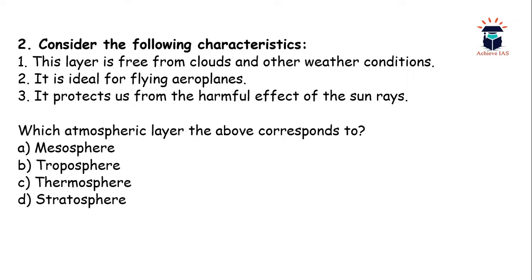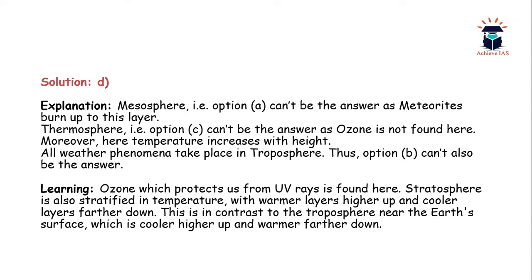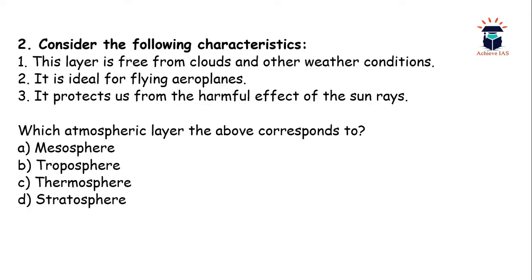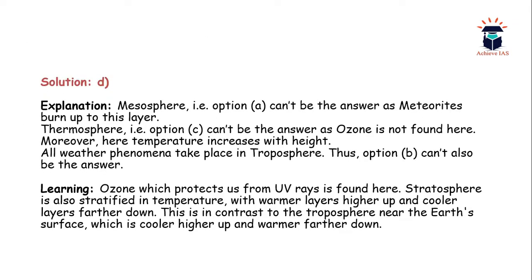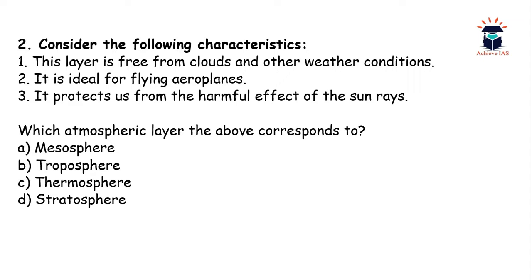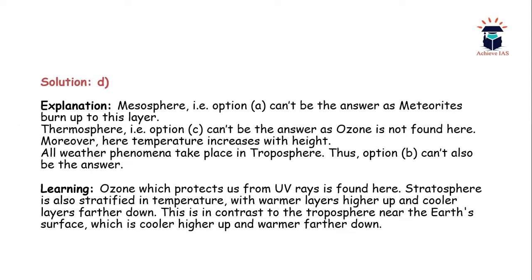Next question: consider the following characteristics — (1) this layer is free from clouds and other weather conditions, (2) it is ideal for flying aeroplanes, (3) it protects us from the harmful effects of the sun's rays. Which atmospheric layer do these statements correspond to? The answer is stratosphere — option D. Mesosphere (option A) cannot be the answer as meteorites burn up in that layer. Thermosphere cannot be the answer because ozone is not found there, though temperature increases with height. All weather phenomena take place in troposphere, so option B is also wrong.